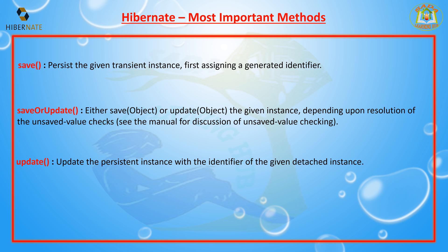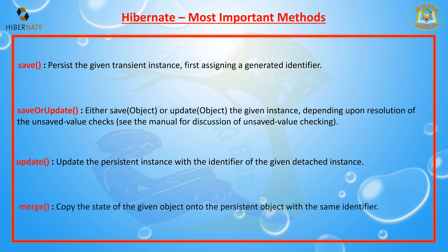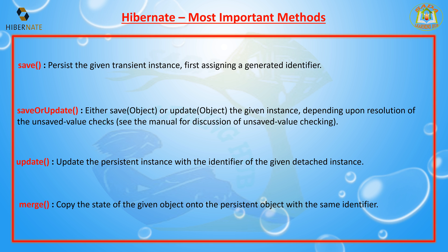The next method is update. The update method updates the persistent instance with the identifier of a given detached instance. If the identifier is not available, it throws an exception.